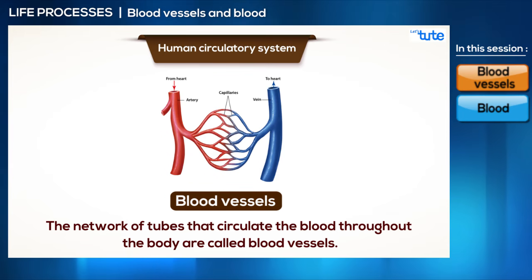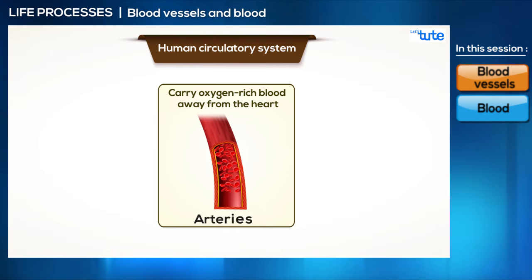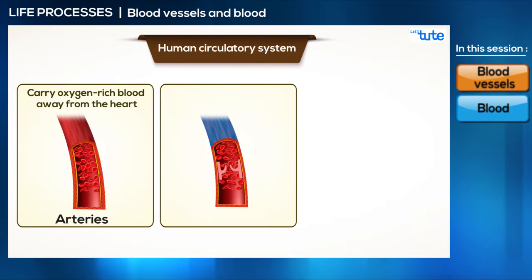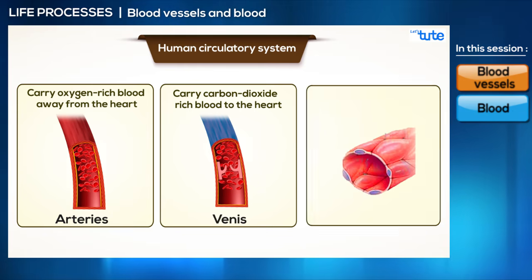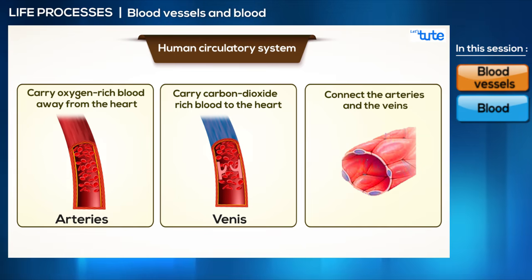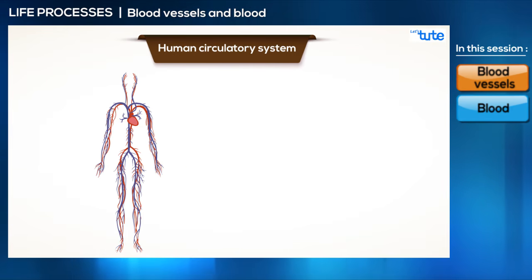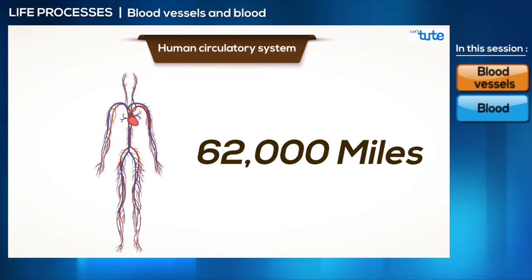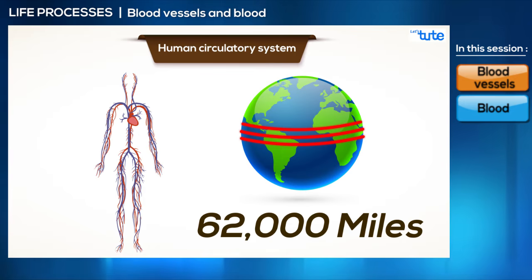Blood vessels are of different types. The ones that carry oxygen-rich blood away from the heart are called arteries. The blood vessels that carry carbon dioxide-rich blood from different body parts back to the heart are called veins. The tiny blood vessels that connect the arteries and the veins are called capillaries. If we laid out all the blood vessels in a line, they would stretch for nearly 62,000 miles — enough to circle the Earth almost three times. That's how vast the network is.